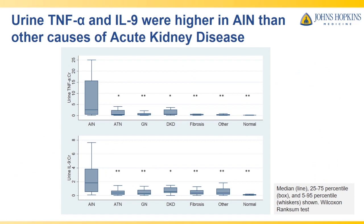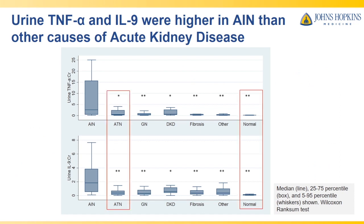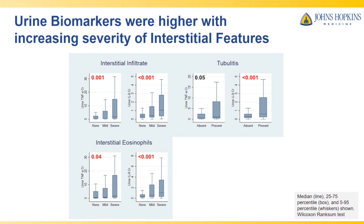The panel on the top shows urine TNF-alpha levels, which are very high in patients with AIN compared to acute tubular necrosis, a common differential diagnosis. In normal patients, the levels are very low and almost undetectable. Similarly, urine IL-9 was higher in patients with AIN compared to all other causes of kidney disease requiring kidney biopsies. These biomarkers track histological findings — levels increase with worsening interstitial infiltrate, tubulitis, and interstitial eosinophils, showing a dose-response relationship to tissue severity.